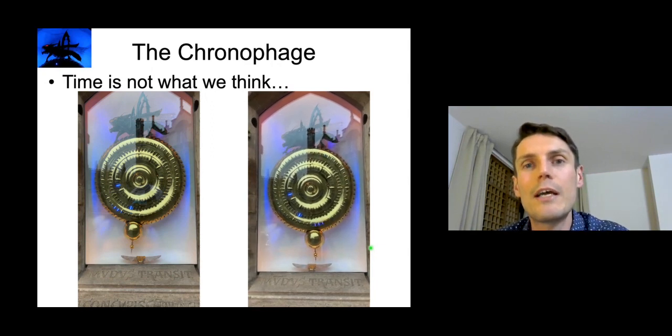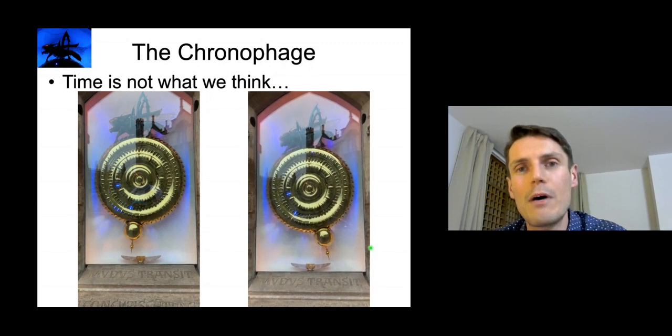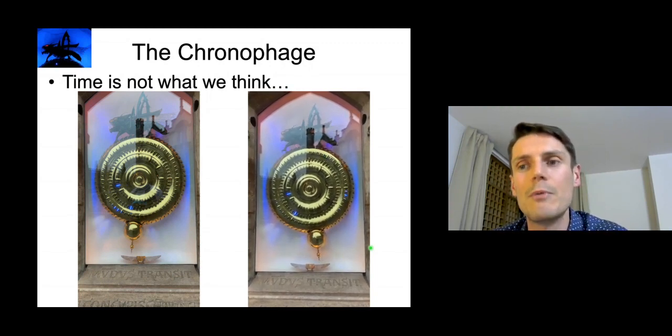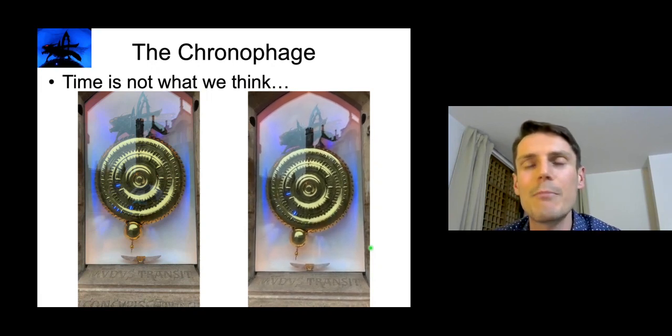These four days are New Year's Day, Corpus Christi Day, John Harrison's birthday, which is the 24th of March, and John Taylor's birthday, the 25th of October. So on those four days, you can watch the chronophage, and guaranteed you'll see it playing these tricks.